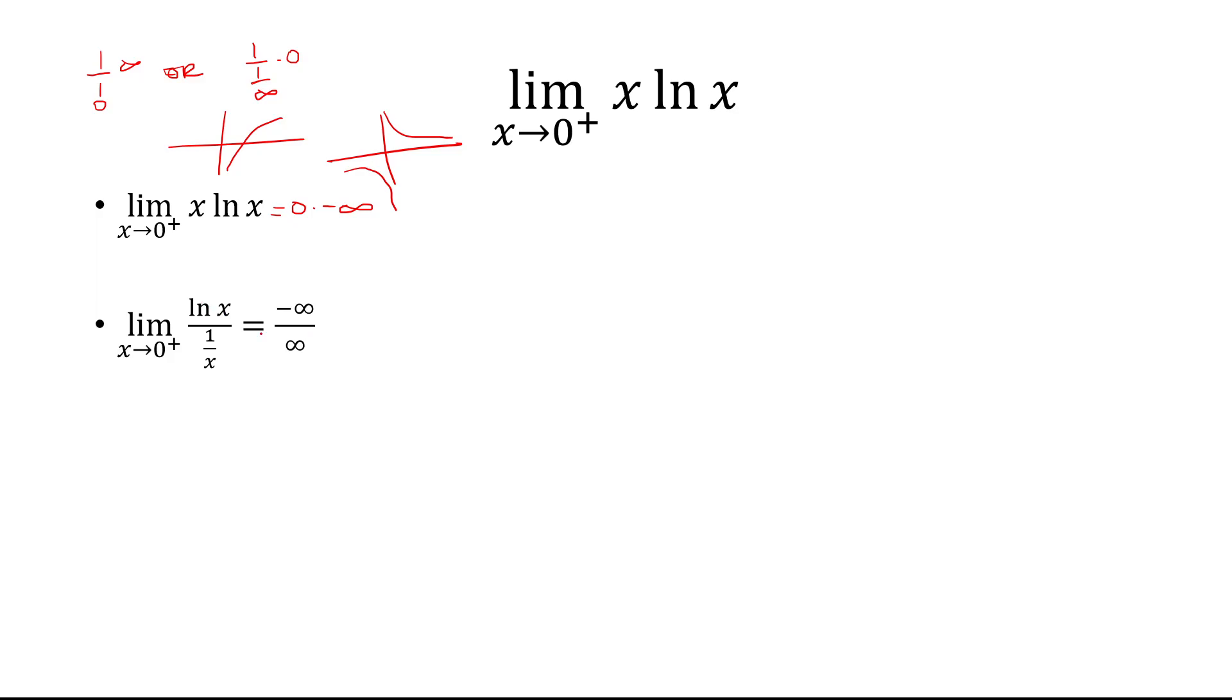Now the derivative of ln of x is 1 over x, and the derivative of 1 over x is negative 1 over x squared. Which we can rewrite this as 1 over x times negative x squared over 1.